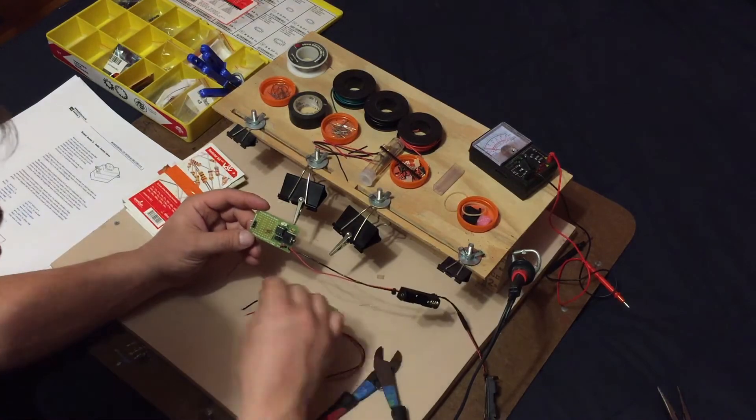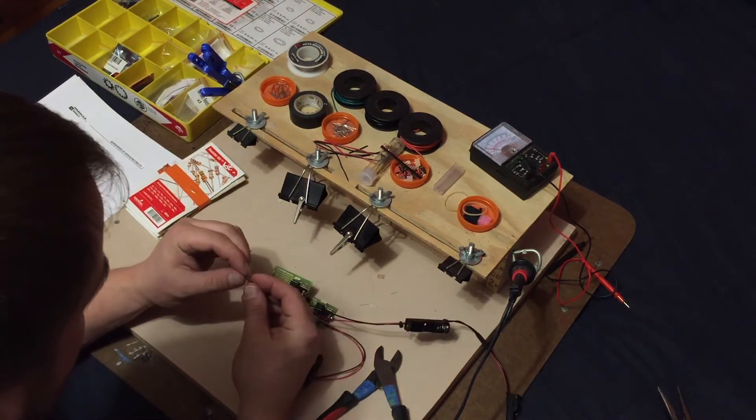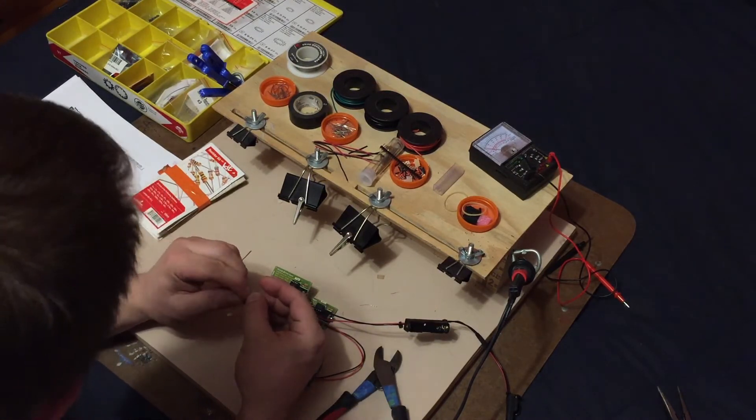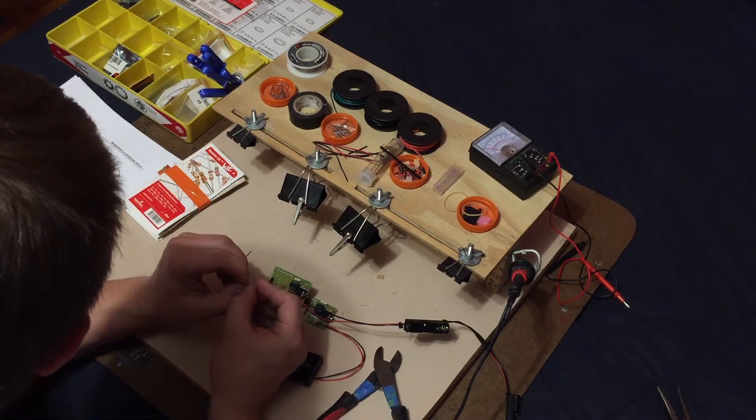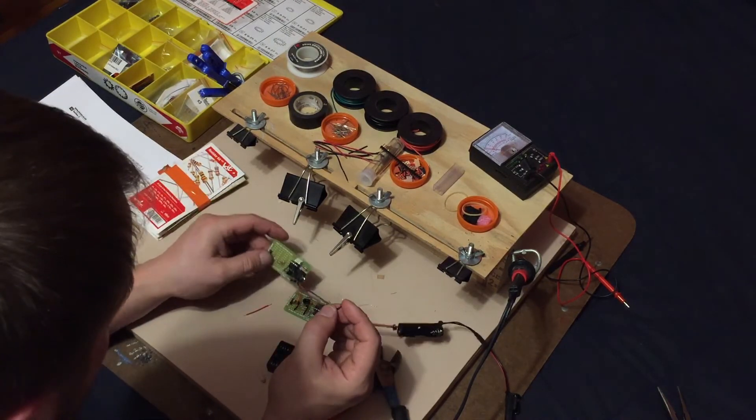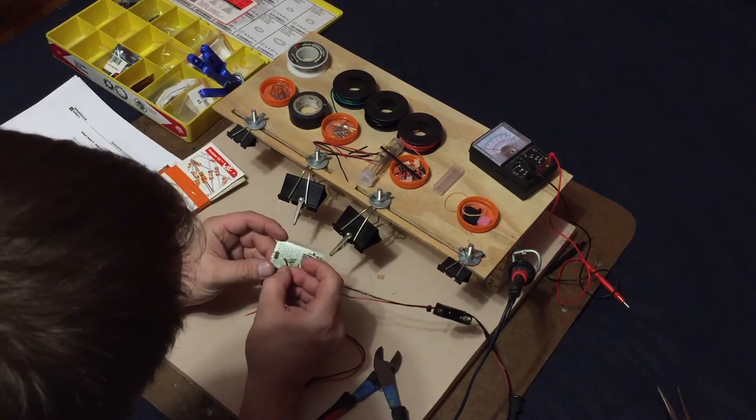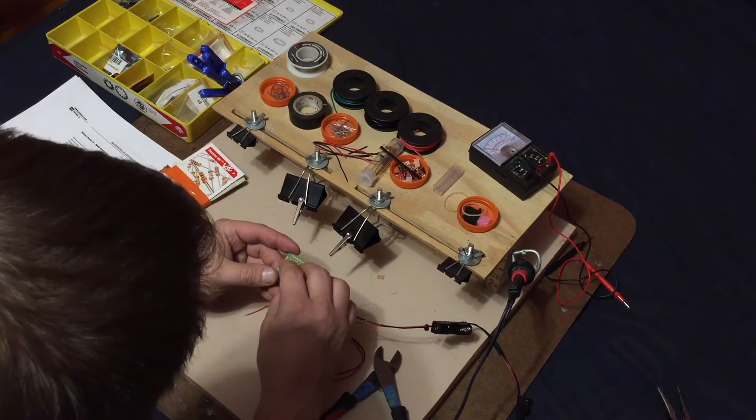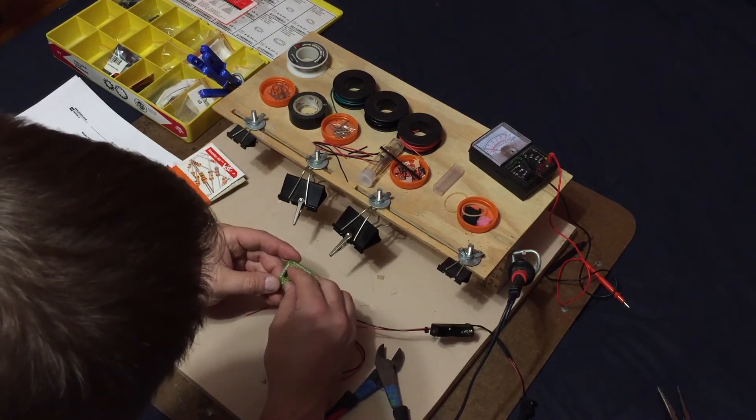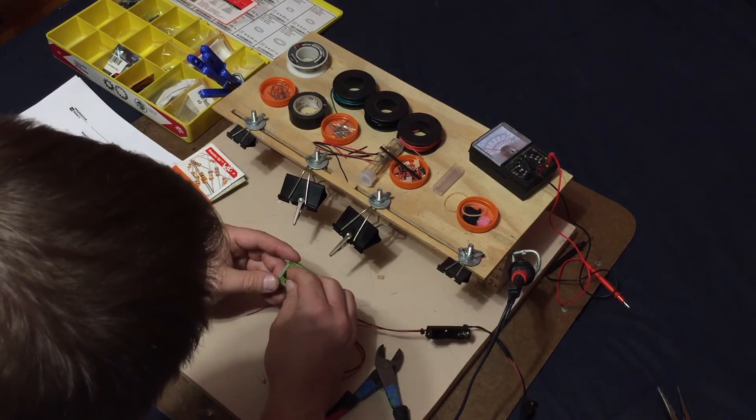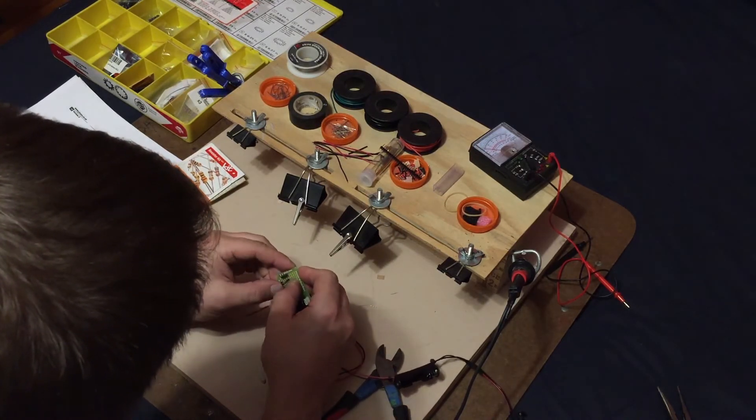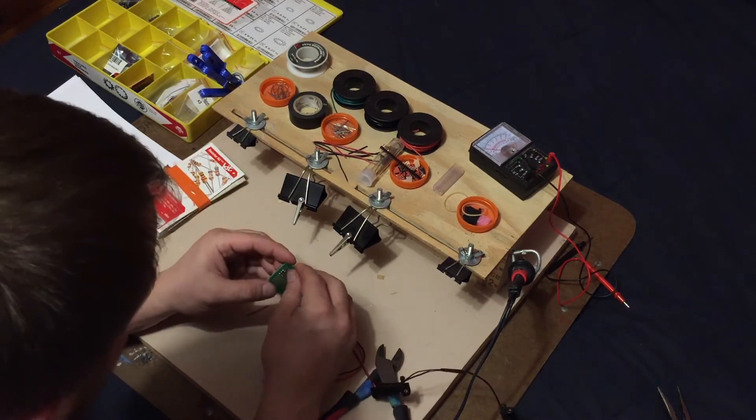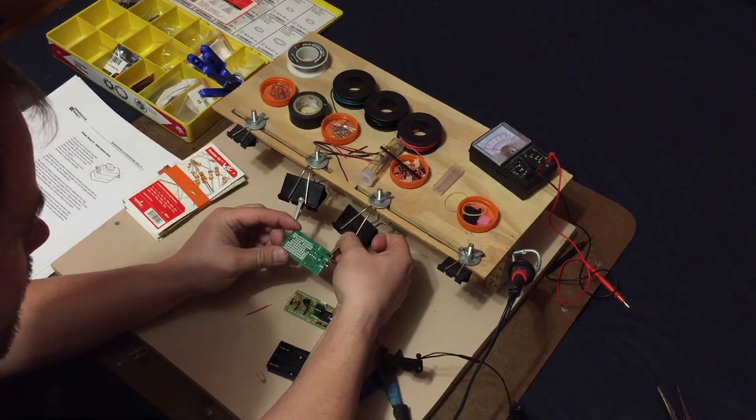Now what we're going to do is run our ground, which I have pre-cut little strip pieces here. Now the ground is the top one. So that's the top pin. So we're going to run the ground all the way to the top of our three pin connector and then down to the ground on our board.